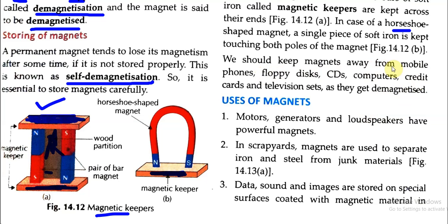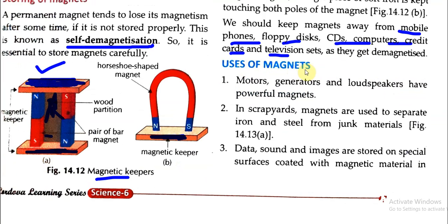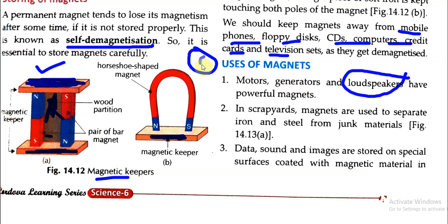Uses of magnets: Motors, generators, and loudspeakers have powerful magnets. In loudspeakers, there is a small magnet in the middle. In scrap yards, magnets are used to separate iron and steel from other junk materials.